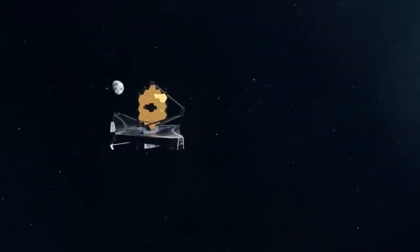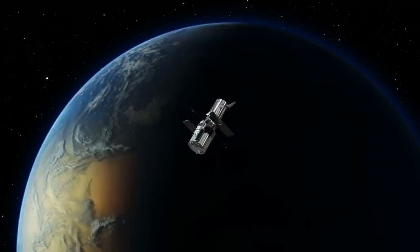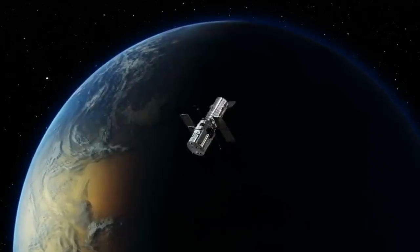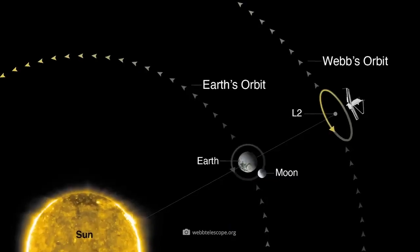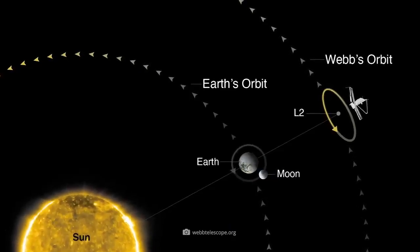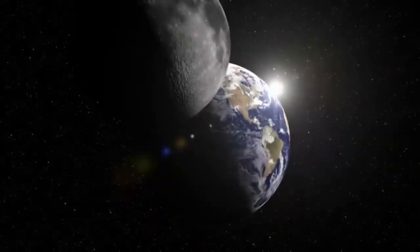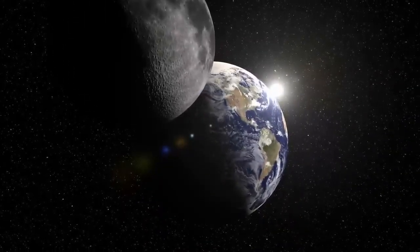Unlike Hubble, the new telescope is also located much deeper in space. Hubble, to date, is located at a distance of 342 miles. James Webb, on the other hand, is positioned a full 900,000 miles from Earth in space. That is more than four times as far away as the moon.